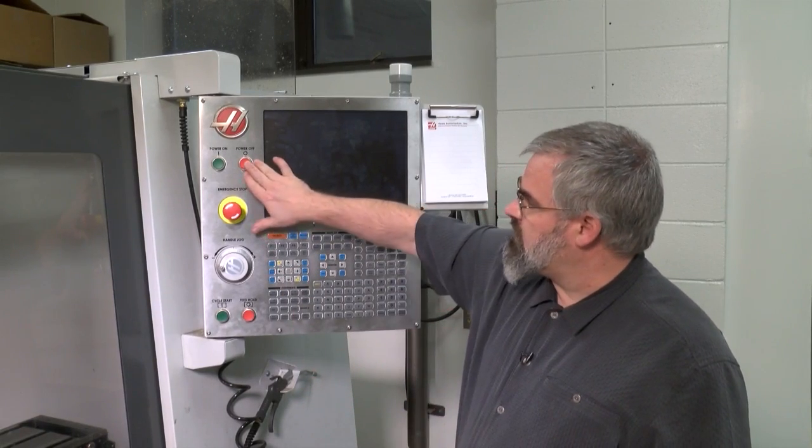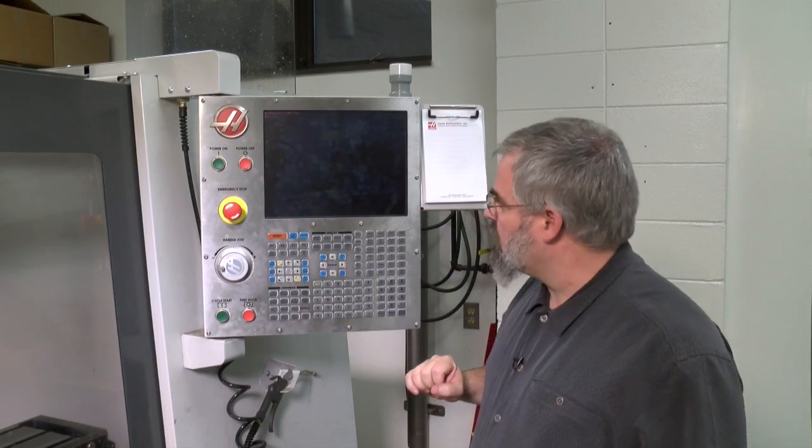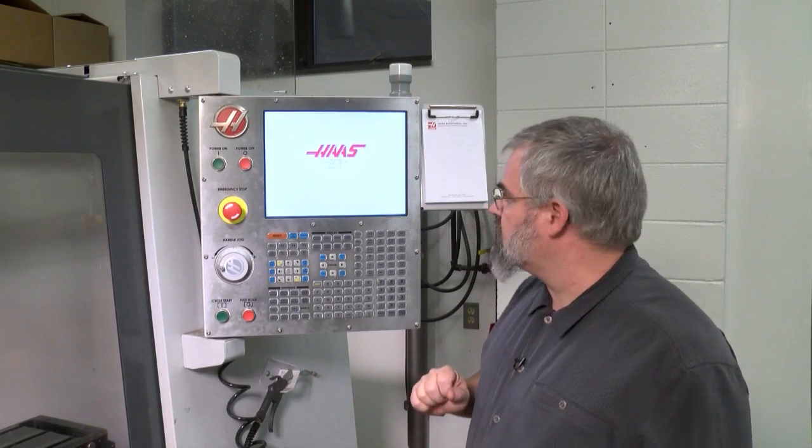To start the Haas machine up, we're going to come to it. We're going to hit the power on button. It'll cycle through its memory. It's just basically like a computer booting up. That's all this is.